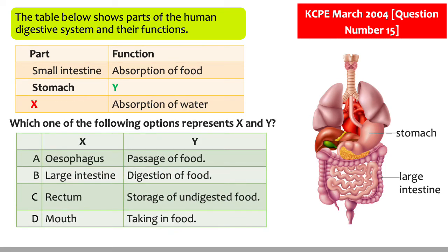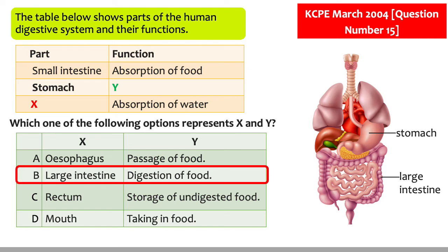The table below shows parts of the human digestive system and their functions. The small intestine is matched to the function of absorbing food. The stomach is matched to the function labeled Y, and a part labeled X is matched to the function of absorbing water. The answer is B. The part labeled X is the large intestine, and its function is to absorb water. The function of the stomach is to digest food.